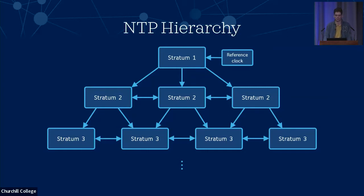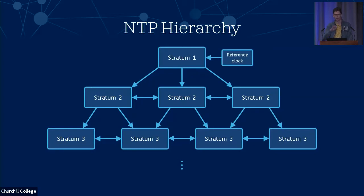The arrows in this diagram represent the flow of the time signal from the reference clocks at the root, synchronizing down towards the tree. They always go from top to bottom and within the same level, but we never synchronize to someone further away from a reference clock than we are. Synchronizing within the same level gives us a bit more reliability.